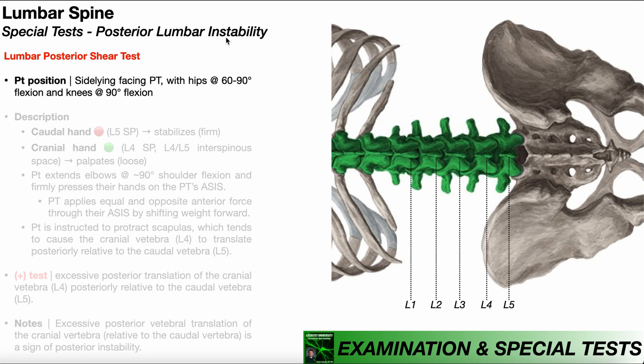To perform this test, the patient will be positioned in side lying facing the PT with their hips bent to about 60 to 90 degrees of flexion and their knees bent to 90 degrees of flexion.